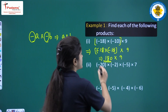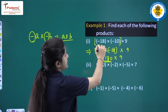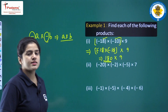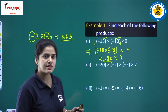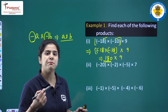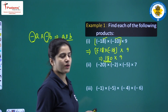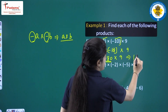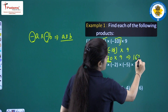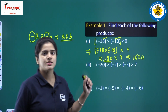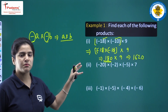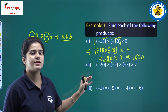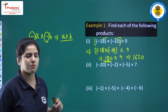In this particular question you can clearly see there are two negative integers — two negative integers, which is even — so the product will be positive. 180 into 9 equals 1620. This is example number one, first part. Let us move towards the second part.